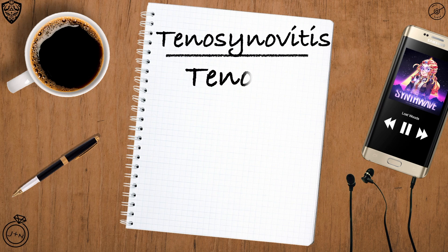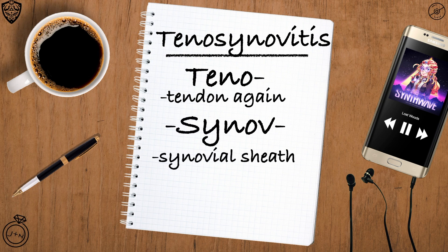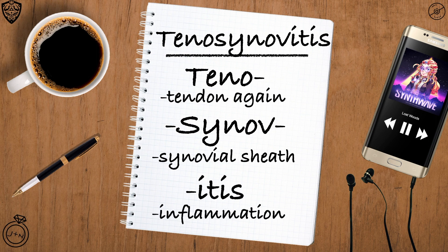One more term you may come across in the healthcare system: tenosynovitis. 'Teno' comes from the word tendon; 'syno' refers to a synovial sheath — a covering that fits around some tendons in the body; and '-itis,' as you recall, refers to inflammation. Put it all together and tenosynovitis is an inflammation of the synovial sheath surrounding a tendon. Practically, tenosynovitis and tendinitis are really similar in presentation as well as treatment.